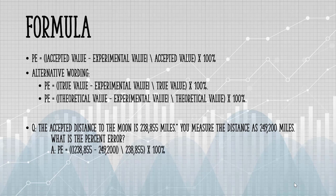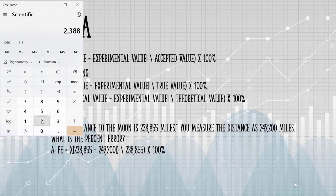We're told the accepted value is 238,855. The experimental value, the one you measured, is 249,200. When I work that out on a calculator, I get 4.33%.